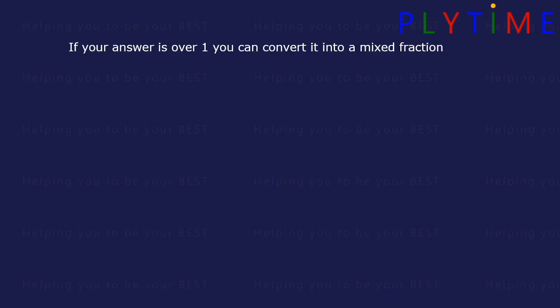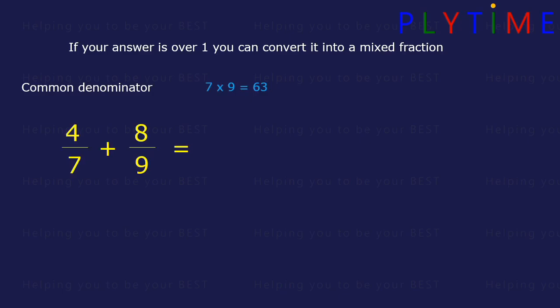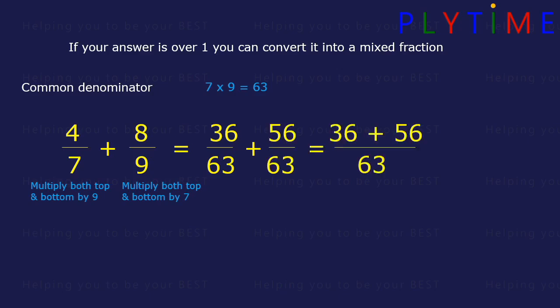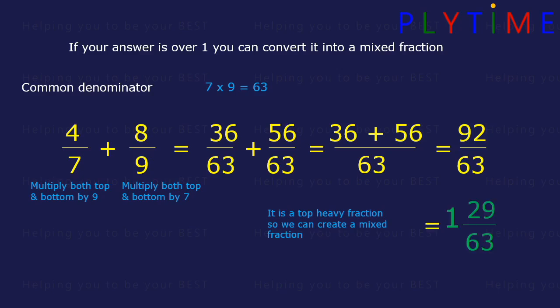If your answer is over 1, you can convert it into a mixed fraction. Let's look for the common denominator for sevenths and ninths. 7 times 9 is 63, so we use that. To convert sevenths to 63rds, we multiply the top and the bottom by 9, giving 36 over 63. And to convert ninths, we multiply the top and the bottom by 7, so it's 56 over 63. Now we can add them together: 36 plus 56 equals 92 over 63. This is a top-heavy or improper fraction, so we can convert it to create a mixed fraction — it's the same as 1 whole and 29 over 63.